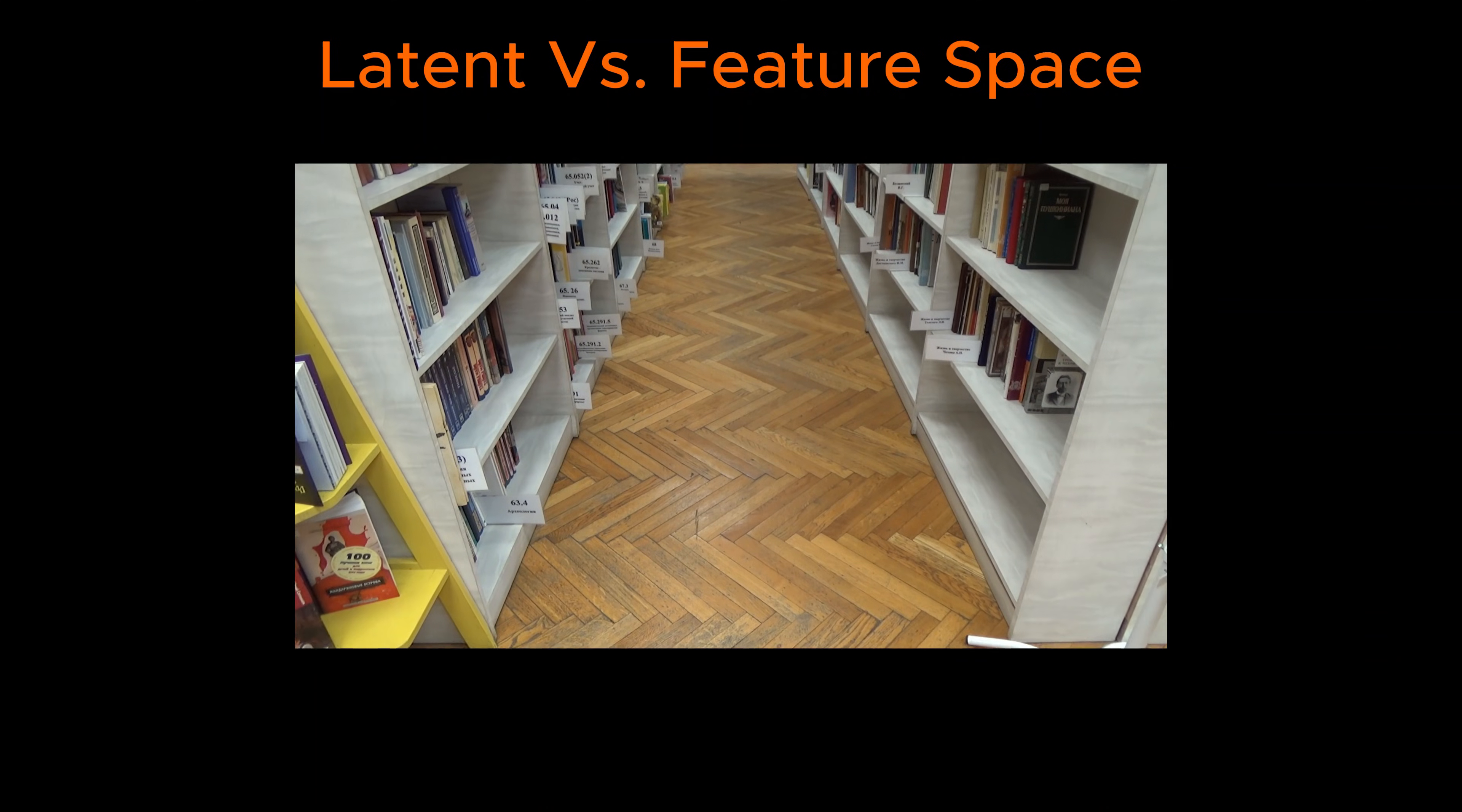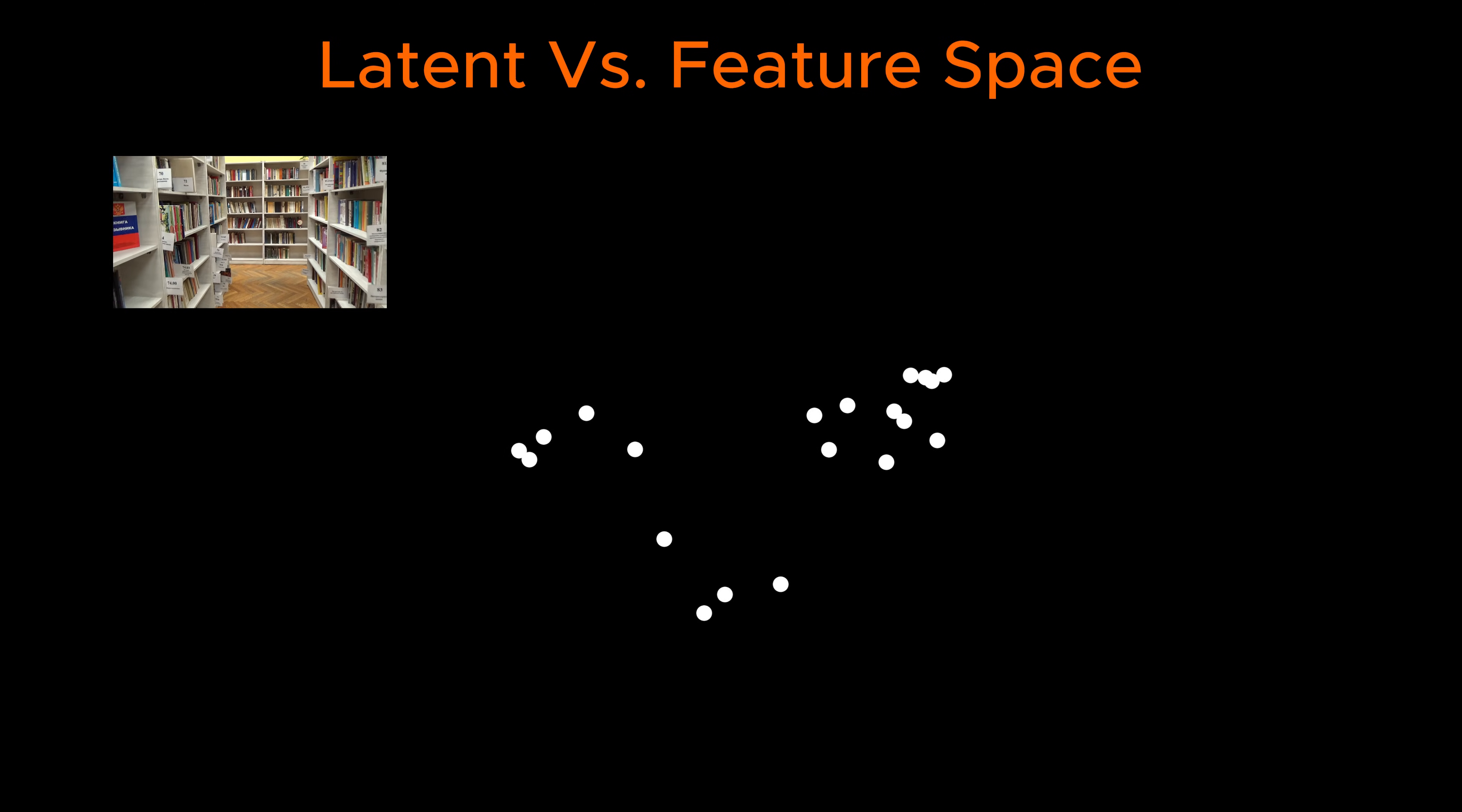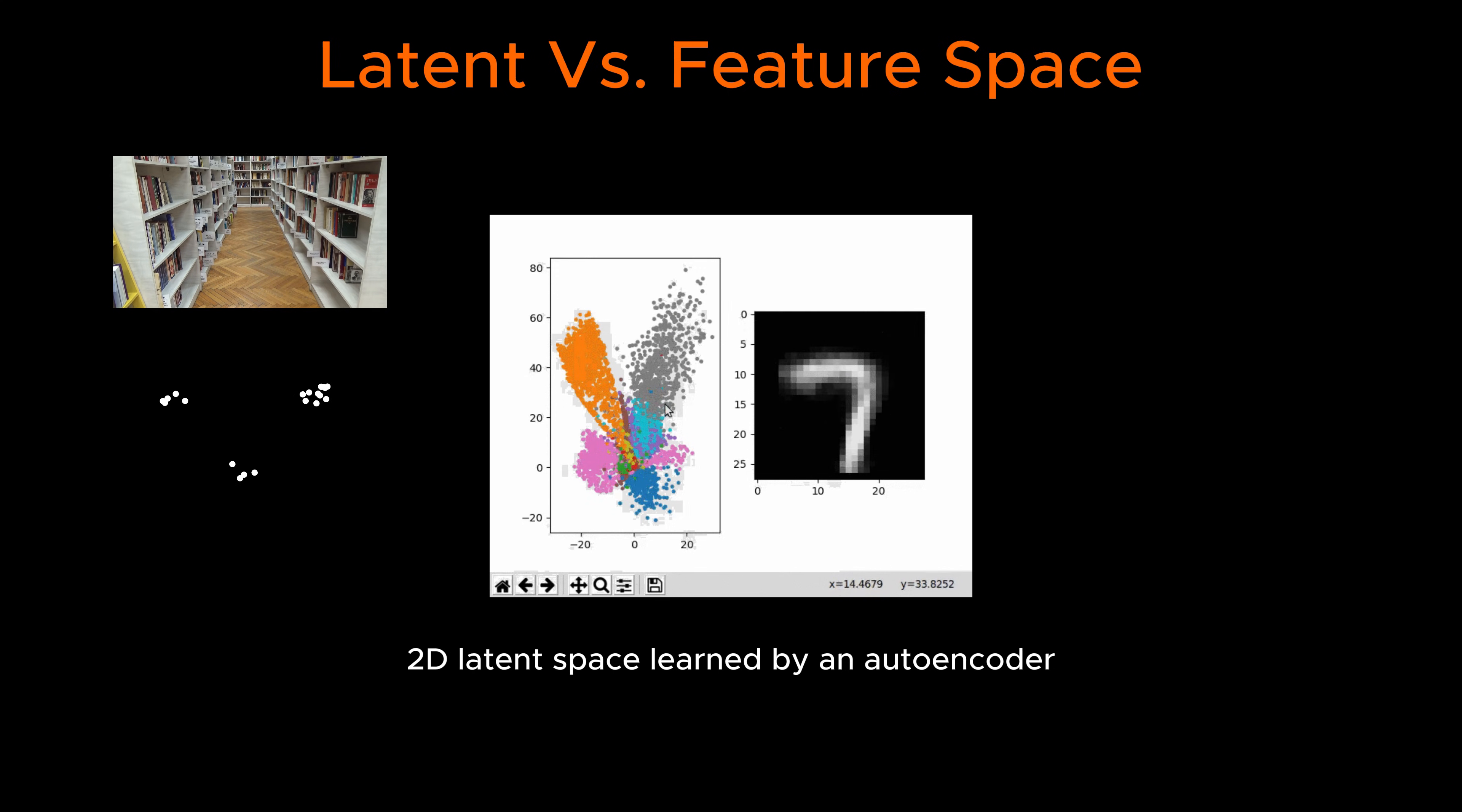But in latent space, the model would cluster books by deeper, hidden relationships, like thematic connections or writing style. This ability to map data into more meaningful spaces is fundamental to how AI models learn. But how does this process actually work? And how do models manipulate latent space to generate new text or new images? Let's dive in.